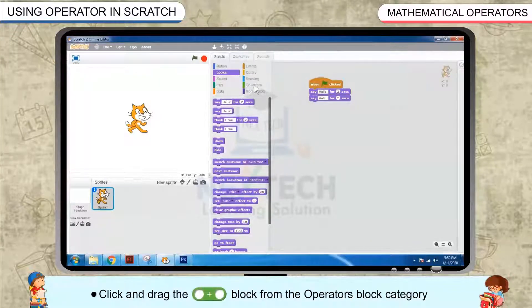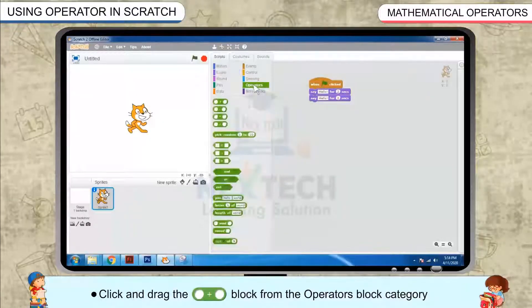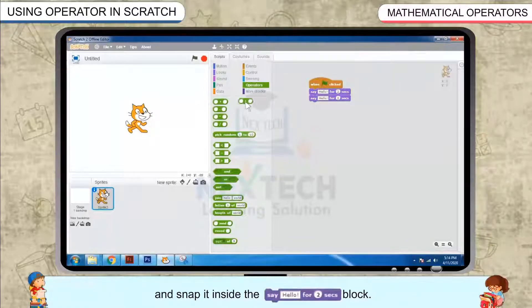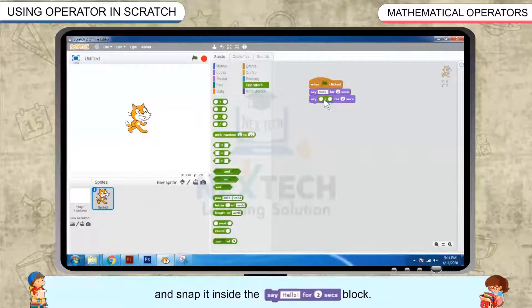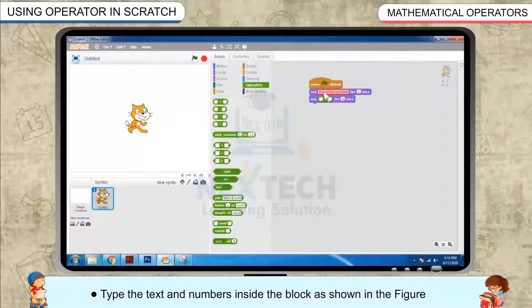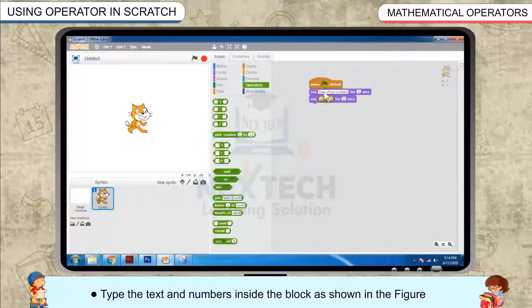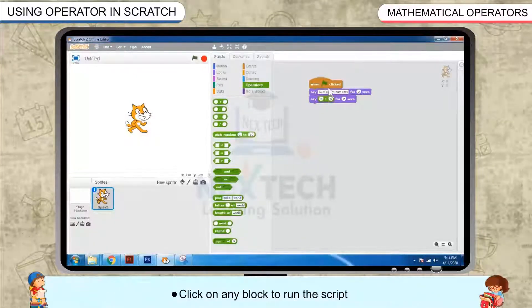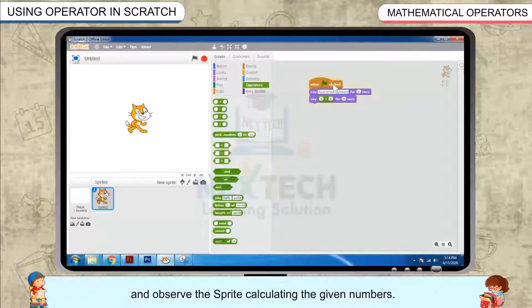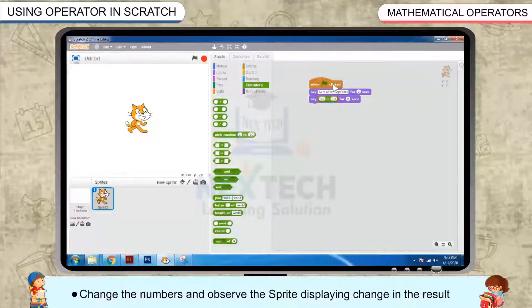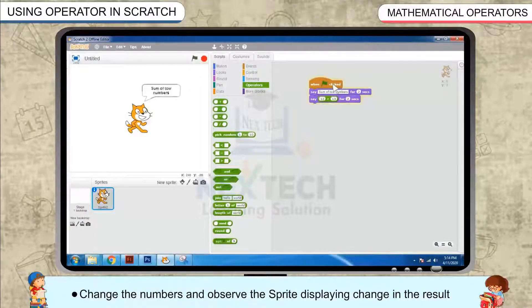Click and drag the Plus block from the Operators block category and snap it inside the Say Hello for 2 Seconds block. Type the Texts and Numbers inside the block as shown in Figure. Click on any block to run the script and observe the sprite calculating the given numbers. Change the numbers and observe the sprite displaying change in the result.